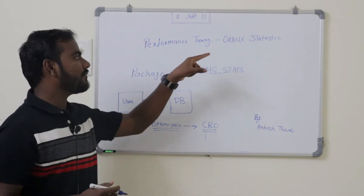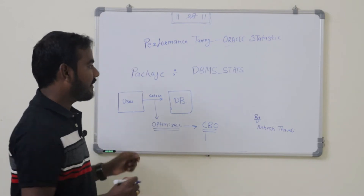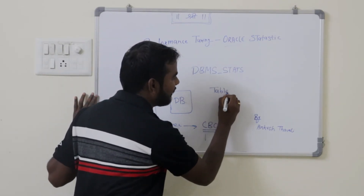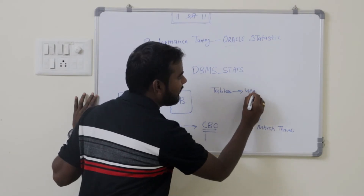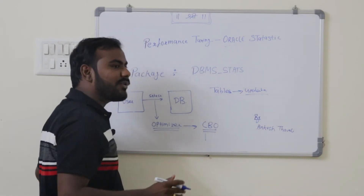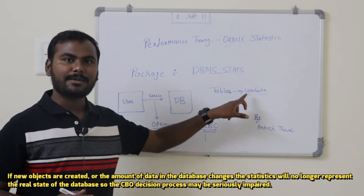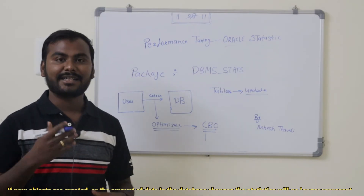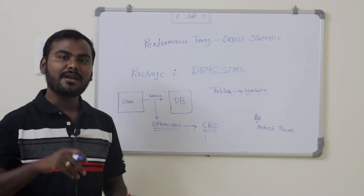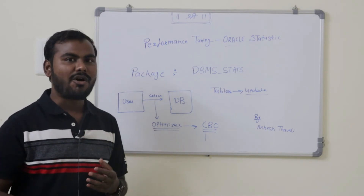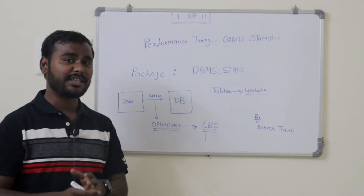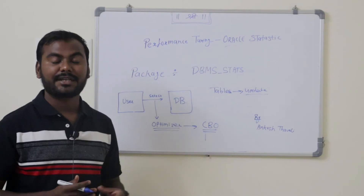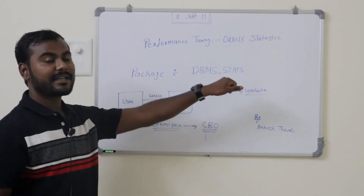Now when do we need to use Oracle Statistics? That is again a really important question. The tables which are not getting updated frequently — it is recommended to use statistics only on those tables. If any table is getting updated, meaning some data is being added, inserted, updated, or deleted from the table on a daily basis, and if you are trying to gather statistics on that table, then you will definitely see a performance issue. So we should use statistics only on tables where INSERT, UPDATE, and DELETE queries are not running regularly.